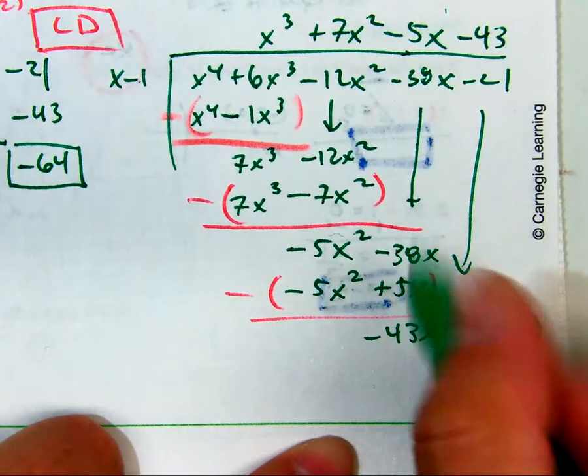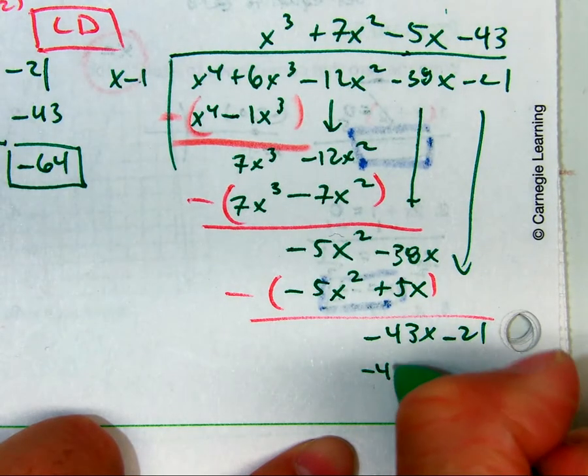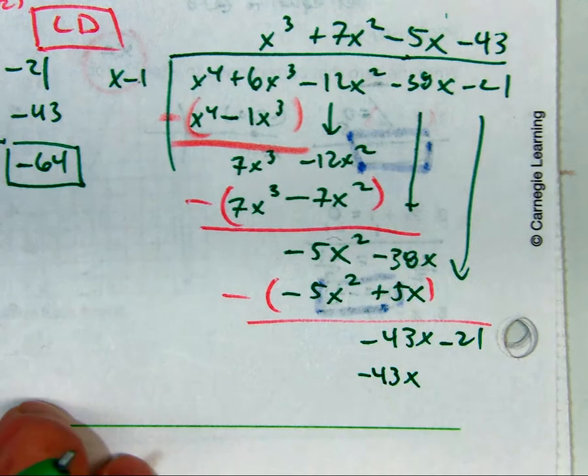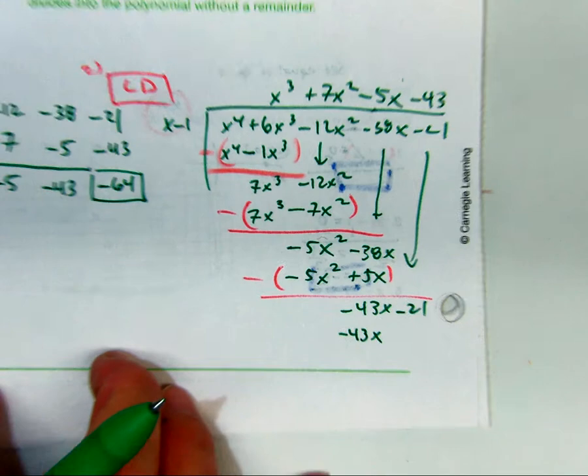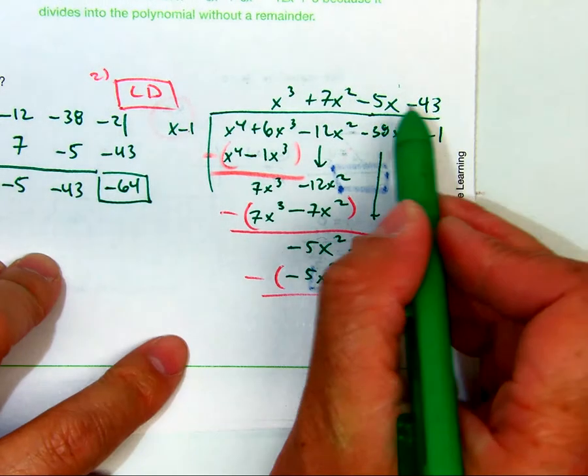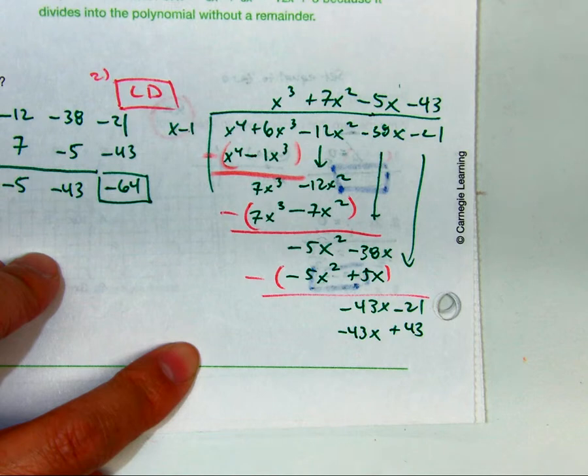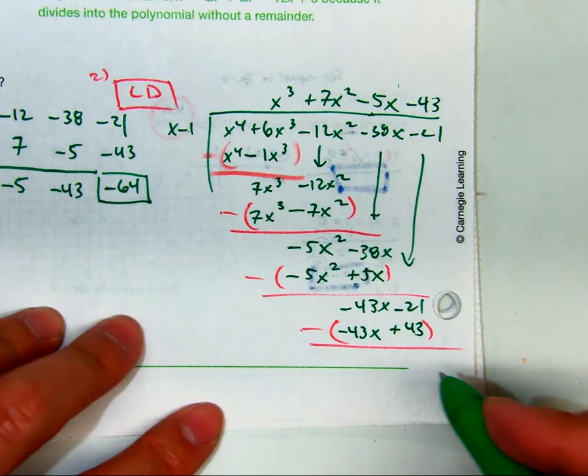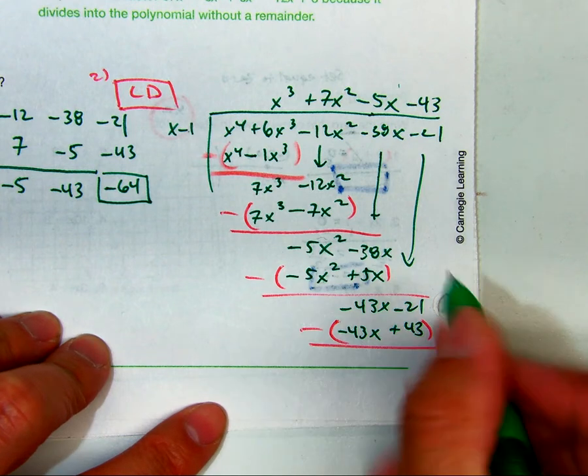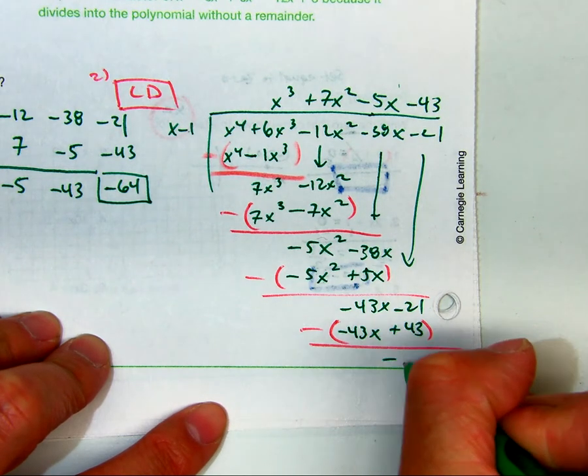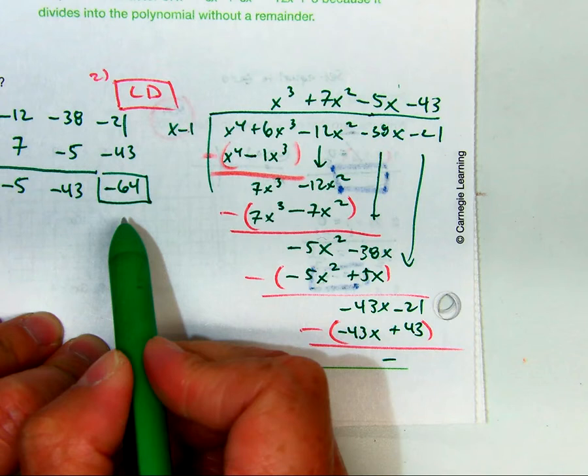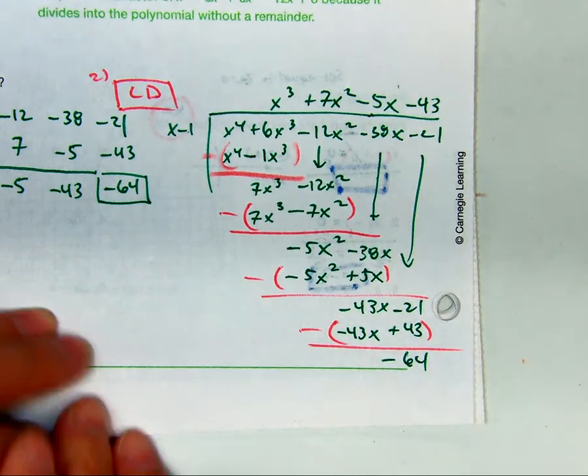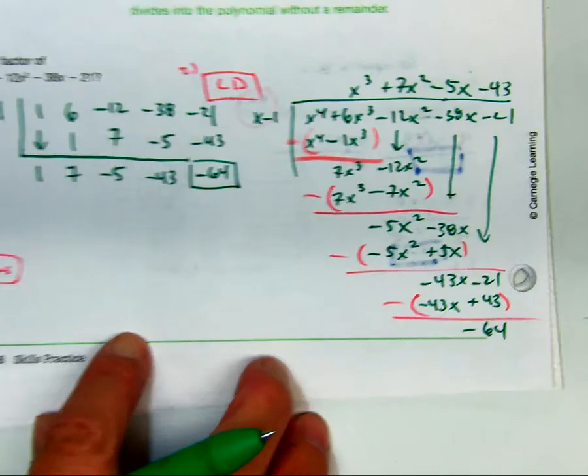So if I multiply, what do you get? Negative 43. Negative 43, that's positive 43 is correct. Subtract those, and what do you get? Negative 64. That's why they call it long division.